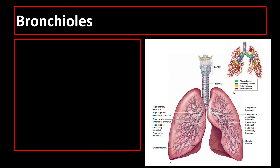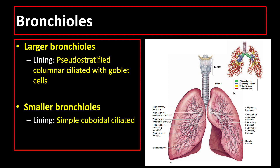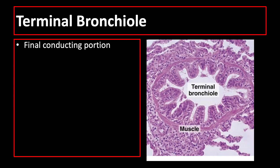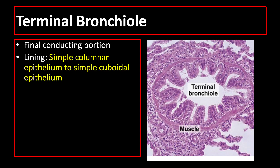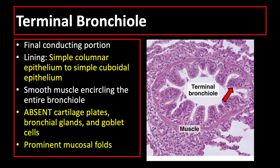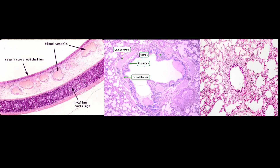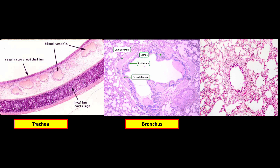The larger bronchioles are lined by pseudostratified columnar ciliated epithelium with goblet cells, while the smaller bronchioles are lined by simple cuboidal ciliated epithelium. The last part of the conducting portion is the terminal bronchiole, lined by simple columnar to simple cuboidal epithelium. It is encircled by smooth muscle, with no cartilage, which makes the mucosal folds more prominent.